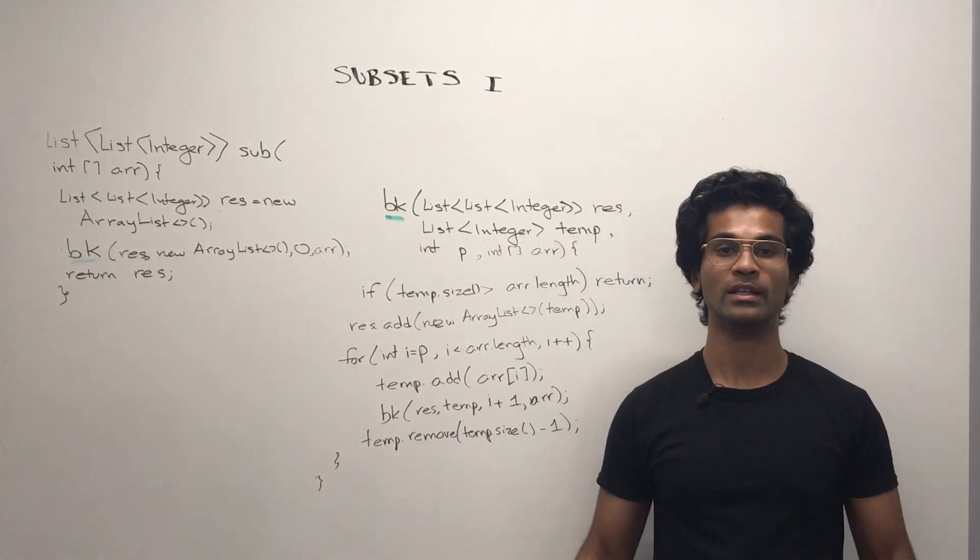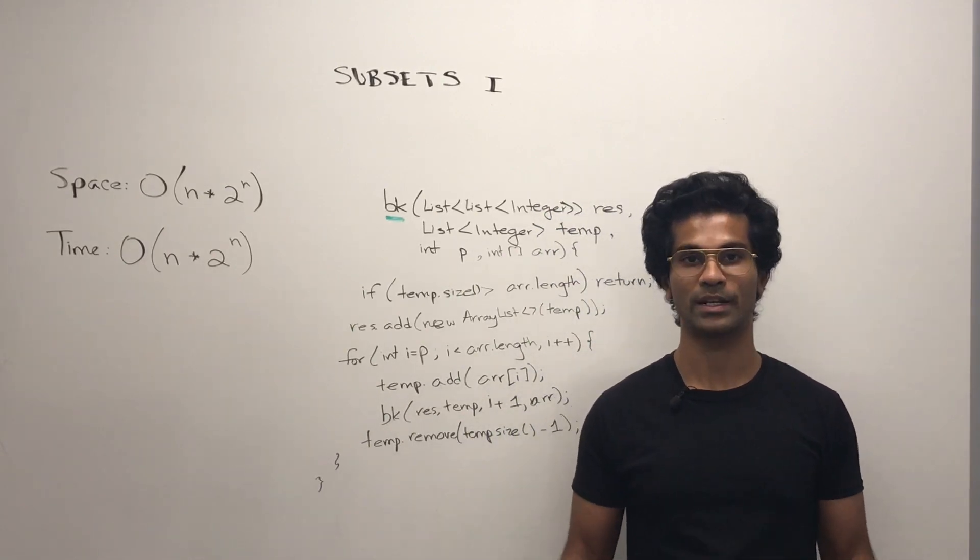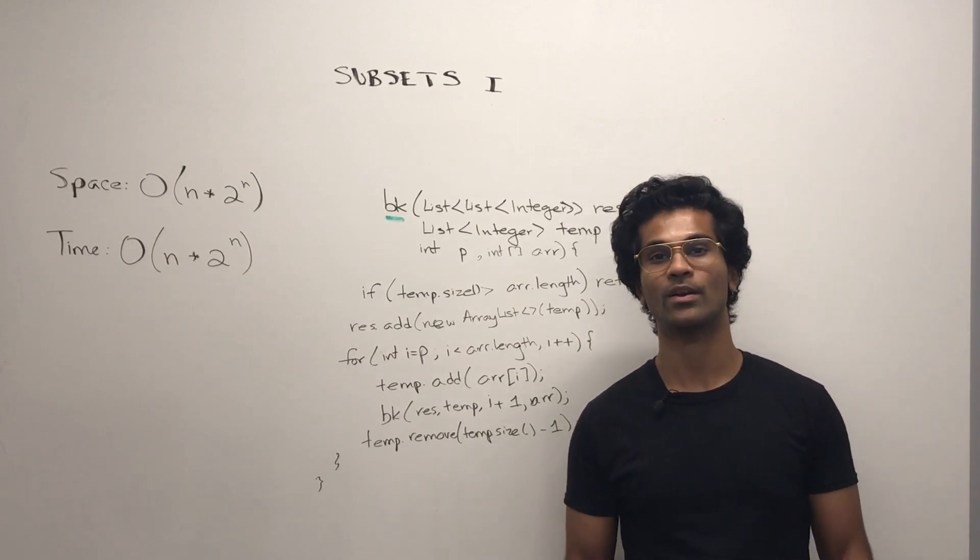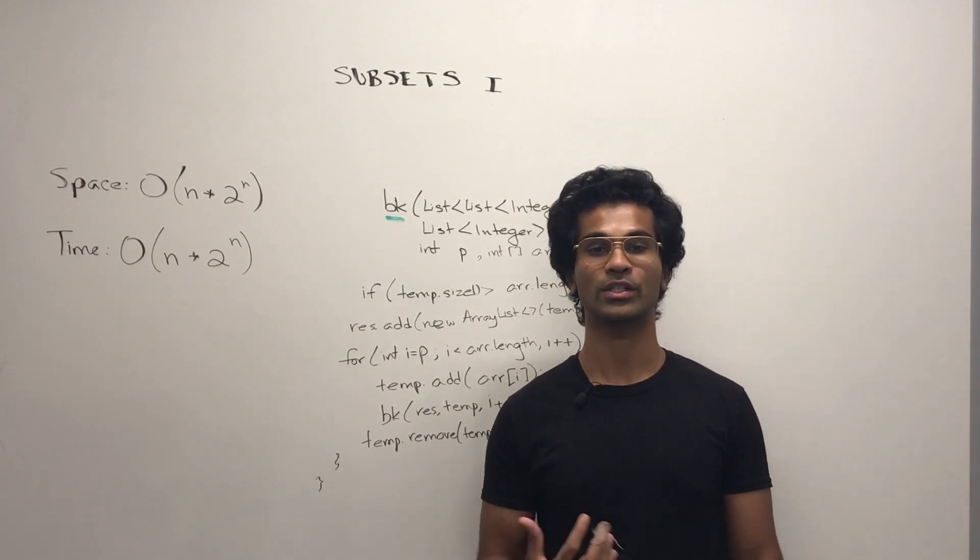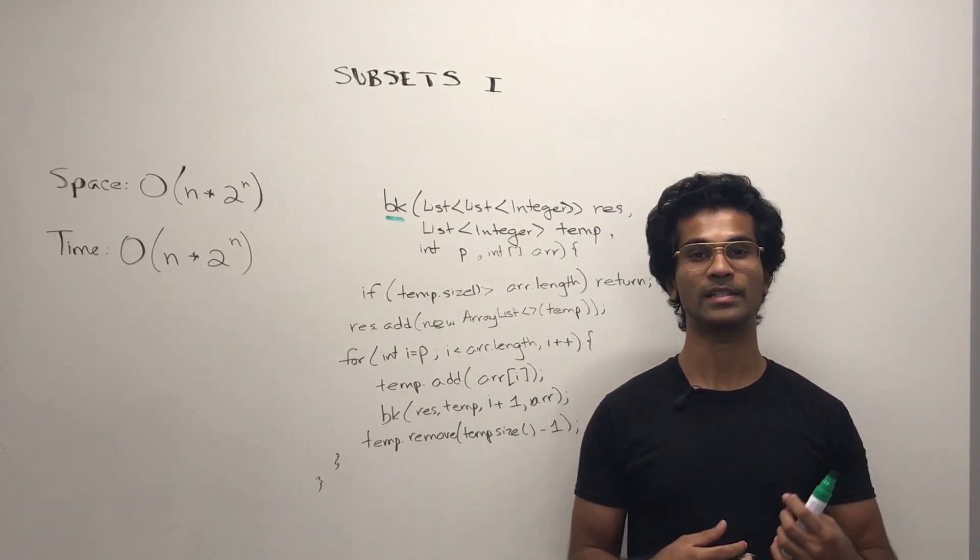Now let's go over space and time complexity. To easily understand the space and time complexity for this problem, let's redefine what a power set is. A power set or the list or collection of all subsets is the total sets we get by deciding to either take or not take an element in the input array.